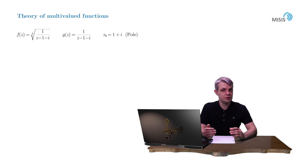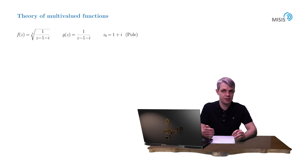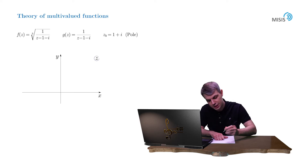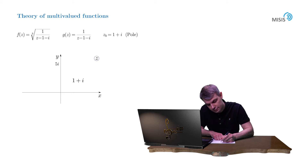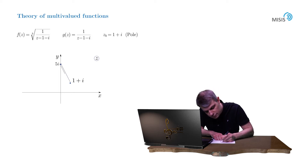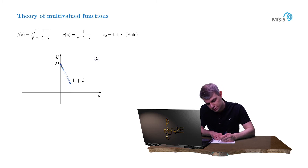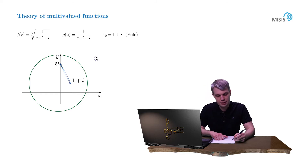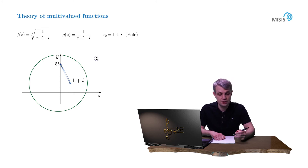But where does the branch cut end — should it go to infinity or should it be finite? We'll encounter functions with finite branch cuts later on, but here let's see for ourselves. We draw a complex plane and draw a finite branch cut starting at point 1 plus i and ending at, say, 5i. Now let's draw a contour which circumvents this branch cut and trace the change of the argument of our multivalued function to see if it remains single-valued.